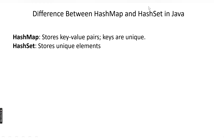HashSet is used to store just the values — it does not store keys. In HashMap, keys should be unique, meaning values can be duplicated but keys should be unique. HashSet stores only unique elements. This is the basic difference between HashMap and HashSet.